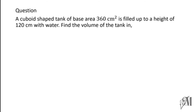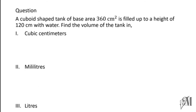Let's do an example. A cuboid-shaped tank of base area 360 square centimeters is filled up to a height of 120 centimeters with water. Find the volume of the tank in cubic centimeters, milliliters, and liters. Starting with cubic centimeters — the equation for volume is length × breadth × height. In this case, length and breadth are not given individually, but the area is given.